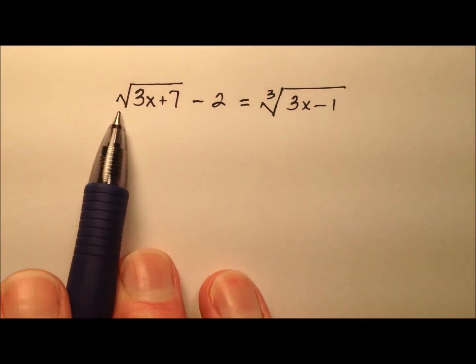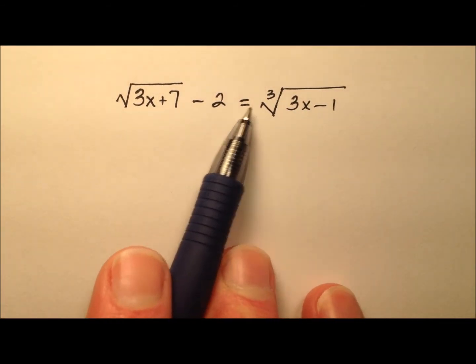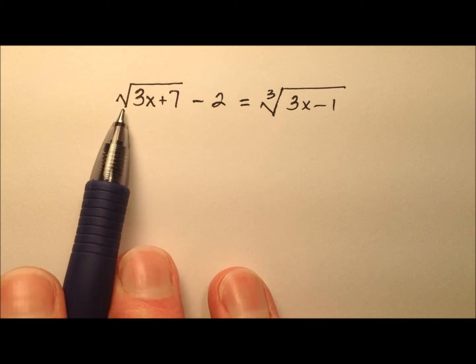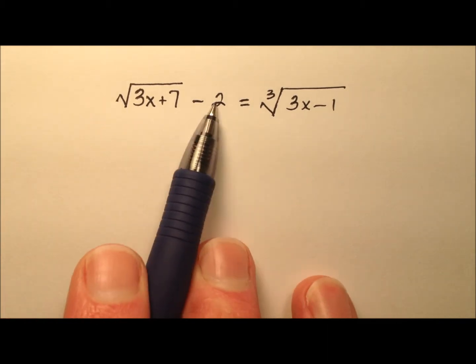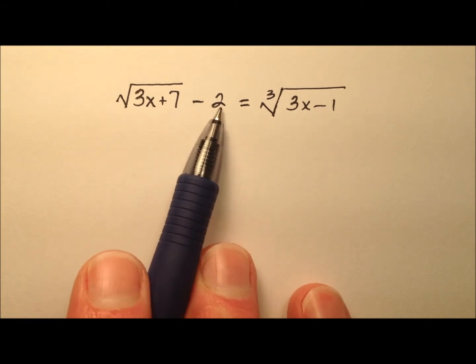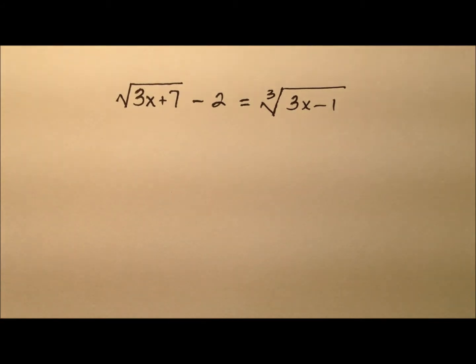In this example, we're going to take a look at solving this radical equation. Probably right off the bat, you'll notice here we have a square root, and here we have a cube root, and there's actually a term as well, this negative 2, outside of any of those radical expressions.